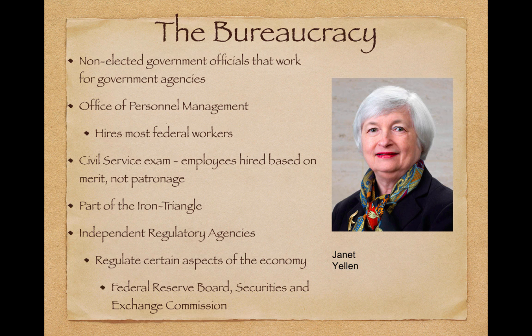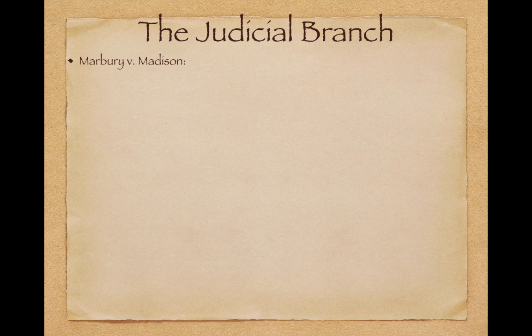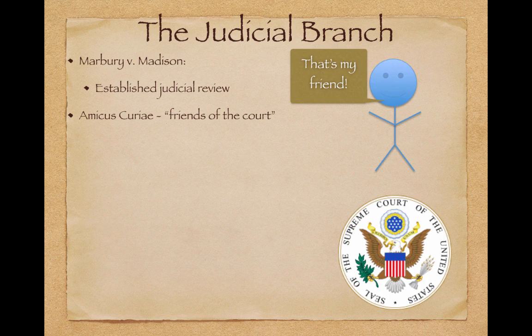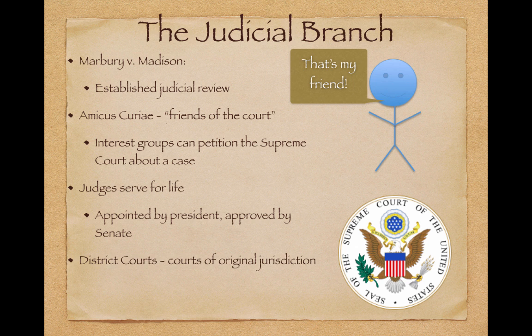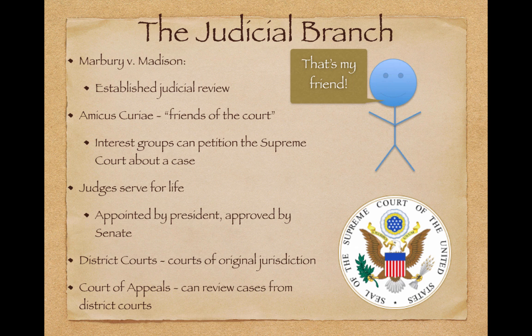Jumping to the judicial branch: Marbury v. Madison, 1803 — this established judicial review. Amicus curiae — circle this — means 'friends of the court,' in which interest groups can petition the Supreme Court about a case, writing a brief to explain how a ruling will impact them. Many cases that go to the Supreme Court have amicus curiae briefs. Judges serve for life; they are appointed by the president but must be approved by the Senate. District courts are courts of original jurisdiction — that's where a case begins. The Court of Appeals is next, and the Supreme Court can review cases from both.